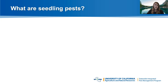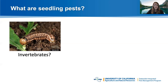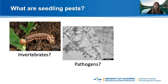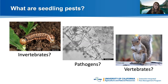Seedling pests can be invertebrates like insects — fungus gnats and aphids. They can be mollusks, which includes snails and slugs. They can be disease-causing pathogens like pythium, which causes damping off. And they can also be vertebrate pests like mice, squirrels, and deer. However, sometimes our pest problem might not be a result of any of these — unfortunately, we might be the culprits ourselves. Despite our best efforts, things happen and seed starting can be a little bit difficult. We'll touch on some of those care requirements later in the presentation.